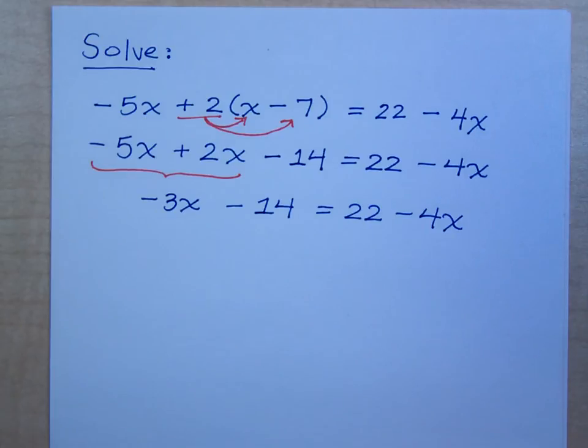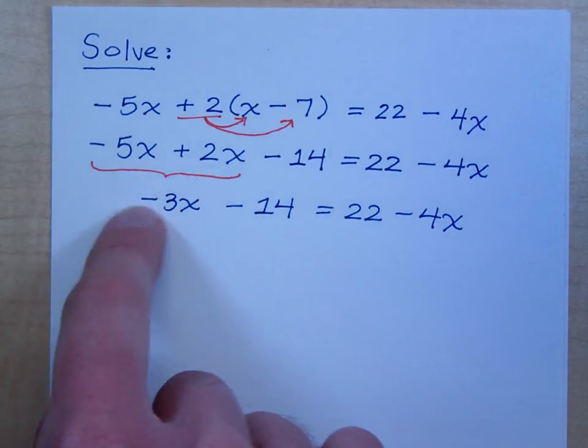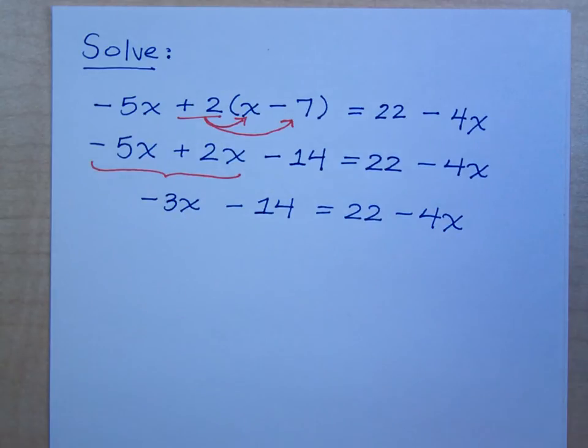Now, as we were doing these problems the other day, it doesn't matter which side you choose to put the variables on and which side you choose for the constants. I usually like to move my terms in such a way that the coefficient of x will be positive. So, you can either move this 4x to the left, or you can move the 3x to the right. What's your choice?